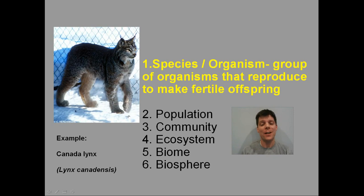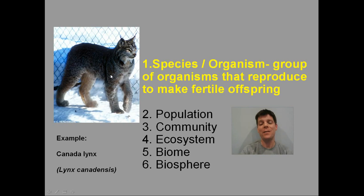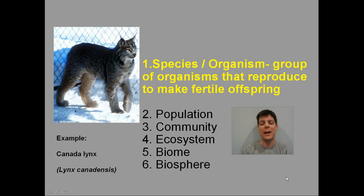Our least complex level of organization is that of species. Species can be defined as a group of organisms that reproduce to make fertile offspring. The example I've selected is the Canada lynx, or lynx canadensis. Now it's important to know that species is a human creation — something we came up with to better understand our environment — and there are examples in nature where the species barrier is blurred, where members of two different species are capable of interbreeding and producing a hybrid.